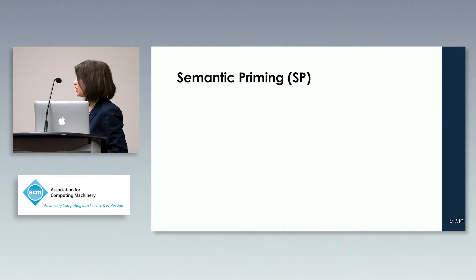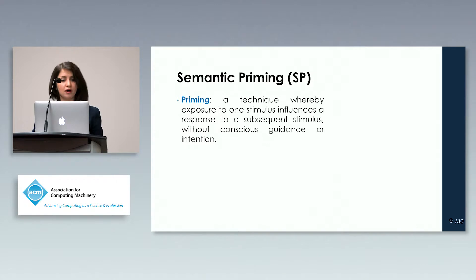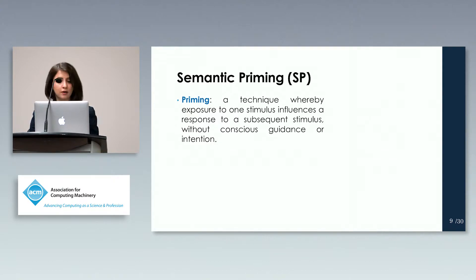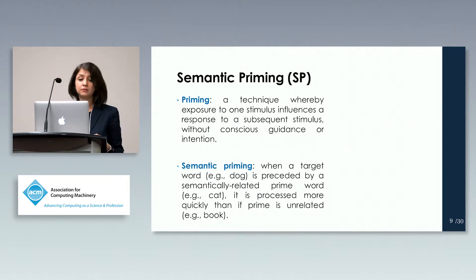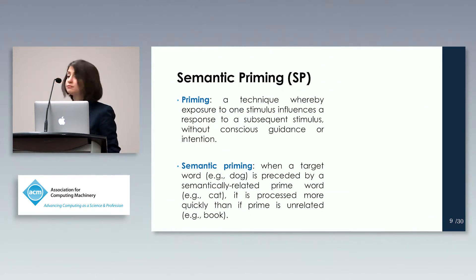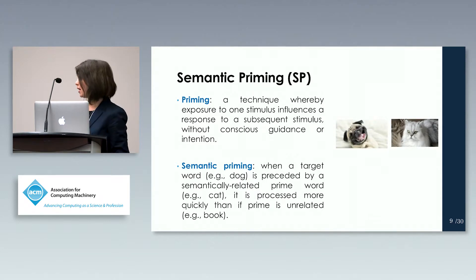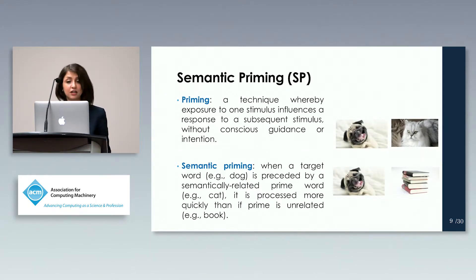The second paradigm we use is semantic priming. Priming is a technique whereby exposure to one stimulus influences the response to a subsequent stimulus without conscious guidance or intention. In semantic priming, when a target word such as 'dog' is preceded by semantically related words such as 'cat,' the user's response is much faster compared to when that word is preceded by something irrelevant, such as 'book.'